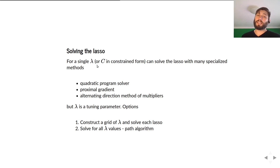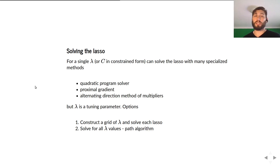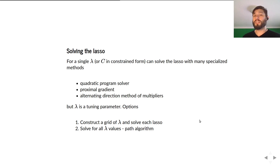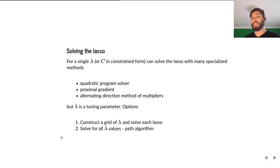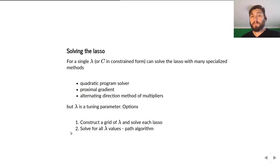Suppose we are tuning lambda or C. For a given Y and X, we want to find the solution for many different lambdas. We could construct a grid of lambdas and solve each lasso problem in sequence. It turns out we can look at how the solutions change as a function of lambda and solve simultaneously for all lambdas — this is called a path algorithm.